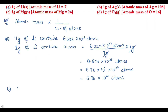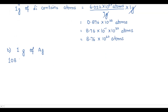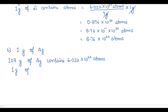The next one is one gram of silver. Applying the unitary method: 108 grams of silver contains Avogadro's number of atoms. So one gram of silver contains atoms equal to 6.022 × 10²³ atoms divided by 108 grams × 1 gram.